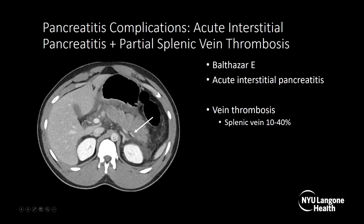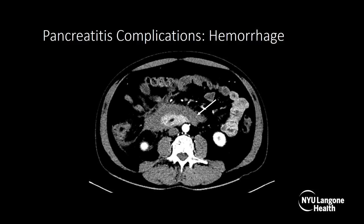On this axial CT with IV contrast, the pancreas is enlarged and there's fluid surrounding it extending on both sides of the abdomen — a Balthasar grade E pancreatitis. There's no necrosis, so this is an example of acute interstitial pancreatitis as described by the revised Atlanta classification. The arrow points to a partial splenic vein thrombosis — a portion of the splenic vein enhances, but a portion does not. Splenic vein thrombosis occurs in 10% to 40% of cases. A dense area in the posterior aspect represents hemorrhage, which may be from a pseudoaneurysm.